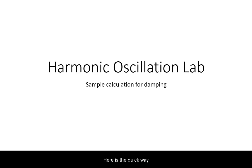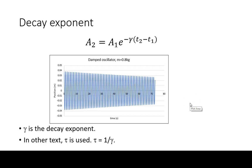Here is the quick way you can calculate the damping coefficient for the harmonic oscillation lab. First, create a position versus time graph for your long run.